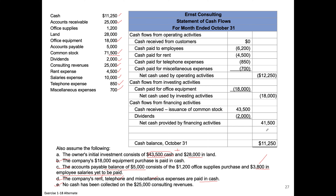On the statement of cash flows, we add the net from operating activities, investing, and financing together, and they total $11,250 — exactly the ending cash balance. The company started on October 1st with zero cash but ended with $11,250. Most of the cash came from the owner's $43,500 contribution; they paid $2,000 in dividends, $18,000 for equipment, and the rest on operating expenses like salaries, rent, and other costs. That's a quick look at how to put together the statement of cash flows.